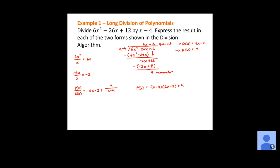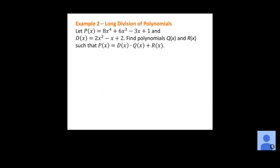That's our process for polynomial long division — it's the same no matter what polynomials you're dividing. The bigger the polynomials, the more steps there will be, but the overall process stays the same. Now let's look at the next example: a fourth-degree polynomial divided by a quadratic polynomial. Again, we want to find Q of X and R of X.